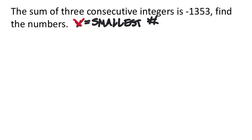So x is the smallest number. Consecutive indicates that the numbers are all one right after another — 1, 2, and 3 are consecutive numbers. We have to be careful with negative values: the more negative a number is, the less it is. So two consecutive negative numbers would be like negative 5 and then negative 4, smallest to biggest.